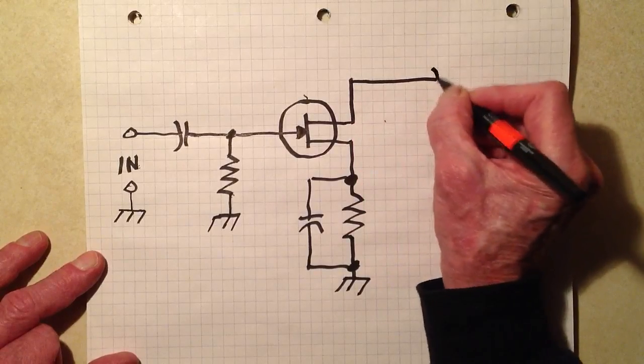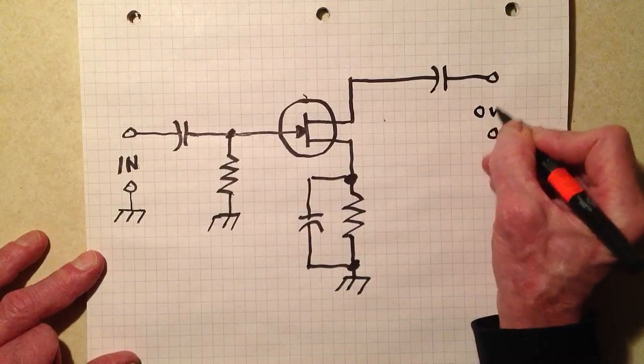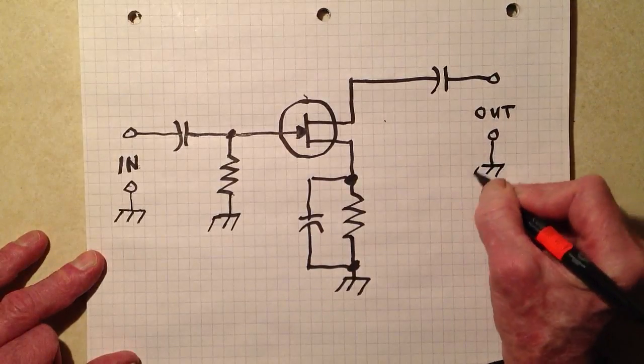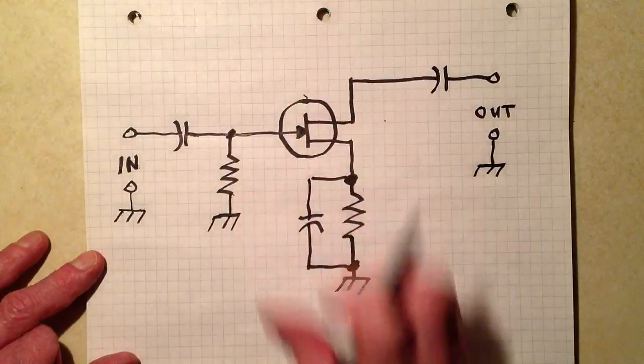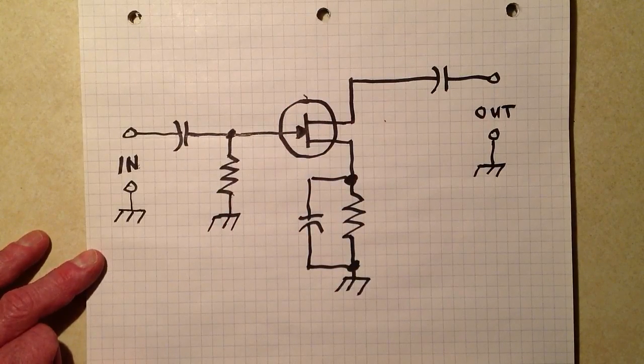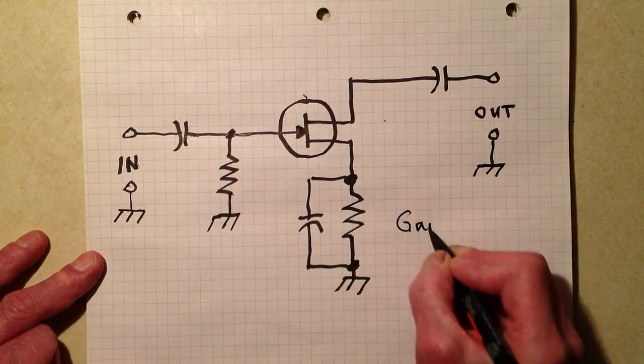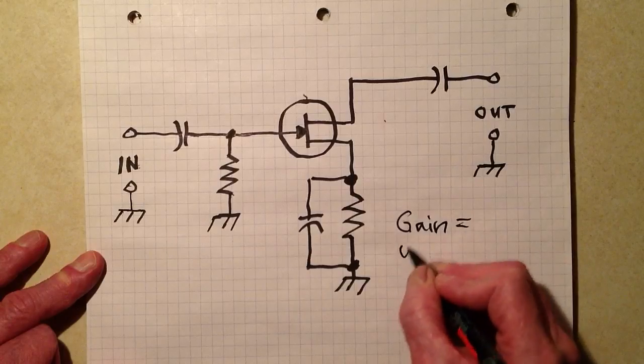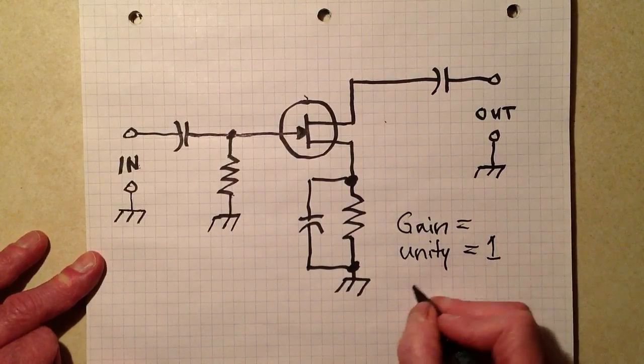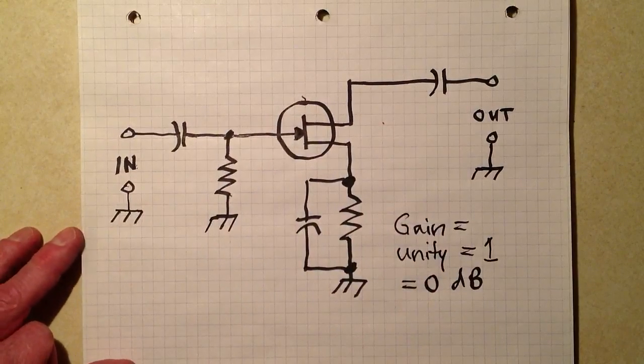But otherwise, we take the output through a capacitor just as we would in the case of the bipolar transistor. Now, the gain of a buffer doesn't have to be very great. In fact, some buffers are built to have a gain of unity. Gain of unity. That means a gain equal to 1 or 0 decibels. That means it doesn't amplify, it doesn't attenuate, it simply serves to isolate.